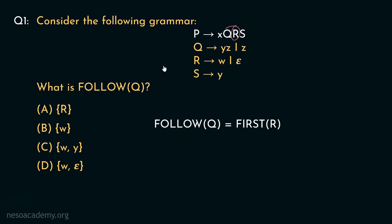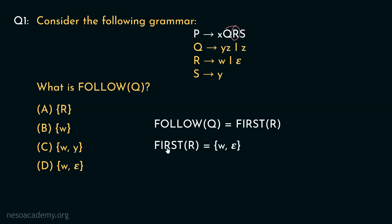Why is this so? Among all these production rules, if you observe all the right-hand sides, in this particular production, Q appears on the right-hand side, and this is the only instance where Q appears. Here, Q is being followed by the non-terminal R, and that's the reason why in order to determine the follow of Q, we are required to find out the first of R. Let's figure out the first of R first. Notice the production rule for R carefully: R can be rewritten as W or Epsilon. Therefore, the first of R will include the symbols W and Epsilon. Now, we know the follow of any non-terminal will never include Epsilon. Therefore, in follow of Q, we will have only W.